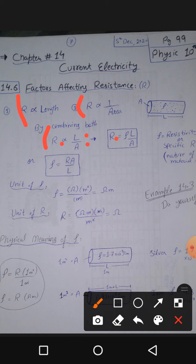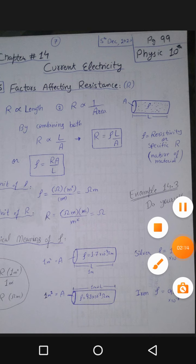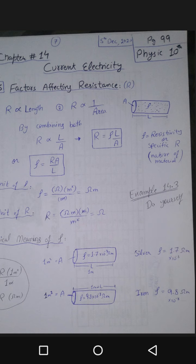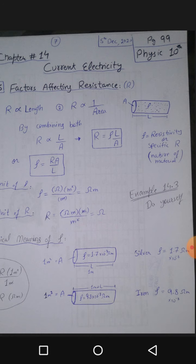When we convert this proportionality to equality, we introduce a constant called resistivity, symbolized by rho (ρ). Its other name is specific resistance. This depends on the nature of the material — how closely packed its particles are, how dense it is, and how much it resists the movement of charges through the conductor. Every substance will have its own resistivity, and it will be a constant property of that material.